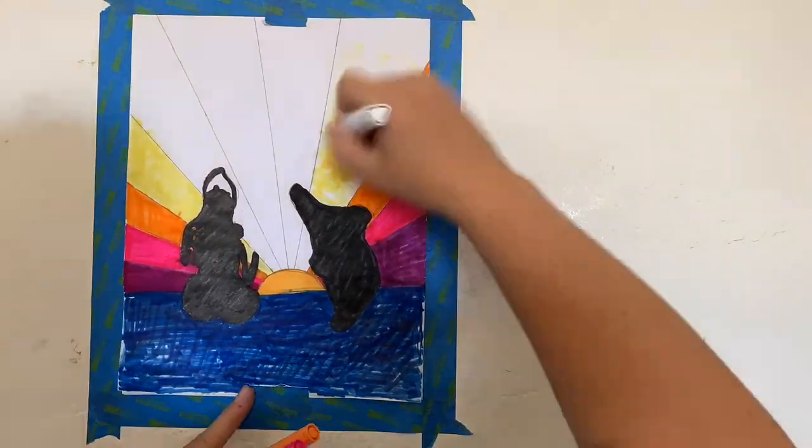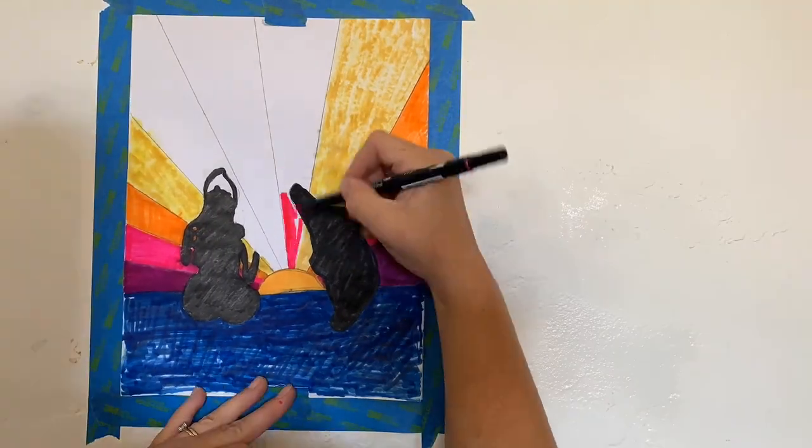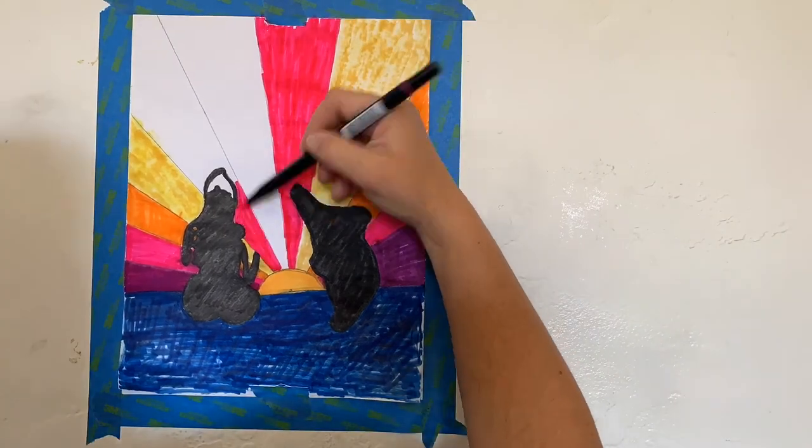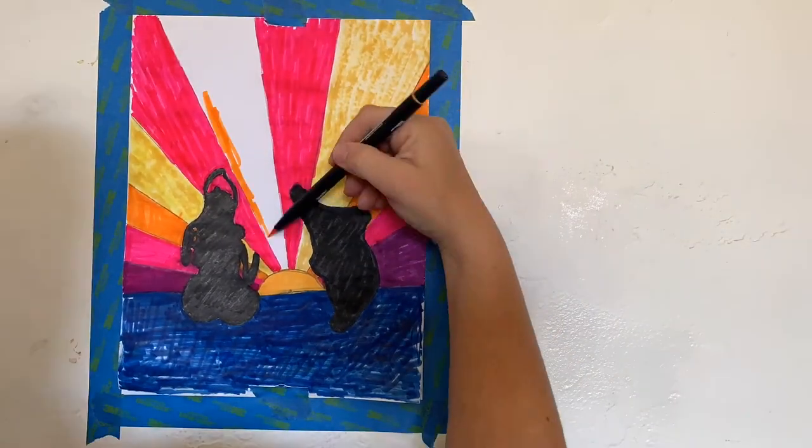Negative space refers to the background or anything surrounding our main focus, such as our outline shadows.